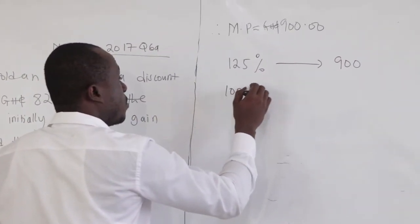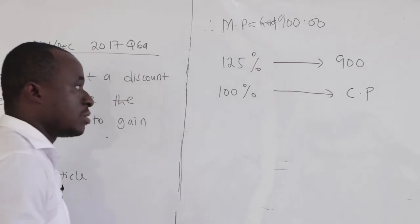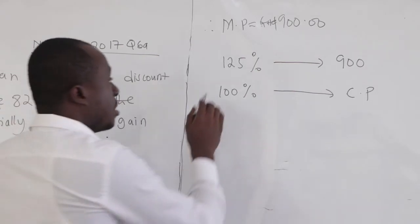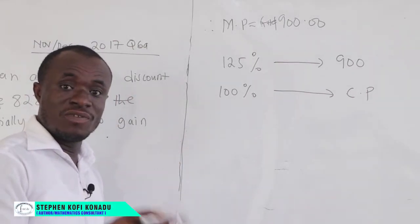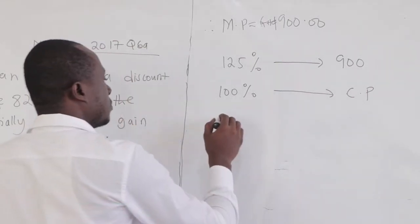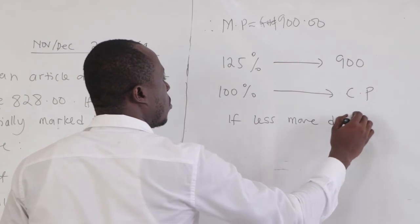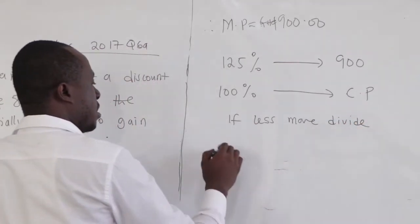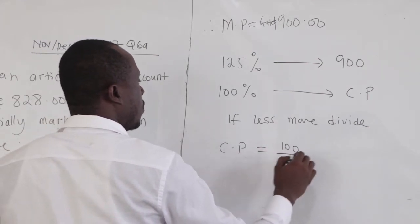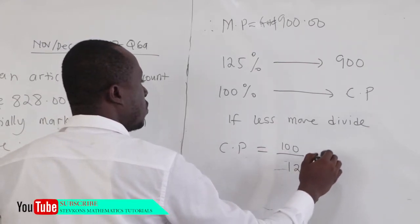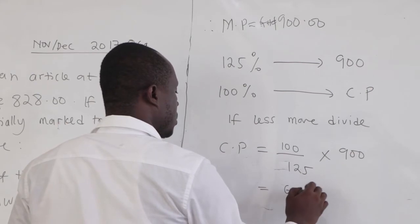I want the cost price — the original price — so 100 percent will be mapping to the cost price. The cost price is always 100. The 125 is giving us 900; what do you think 100 percent will give us? That would be less. So if less, more divide. Our cost price will be 100 over 125 times 900, and computing this gives us 720.